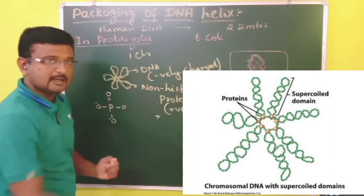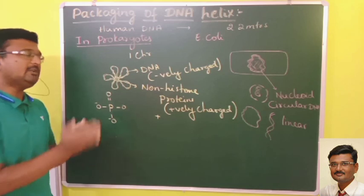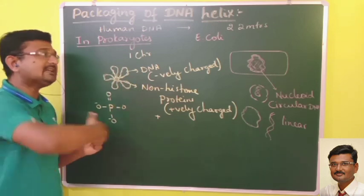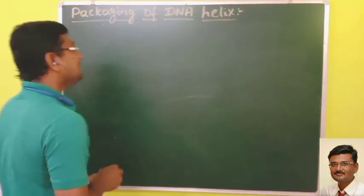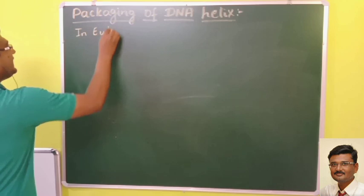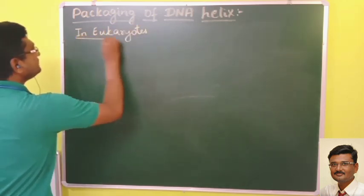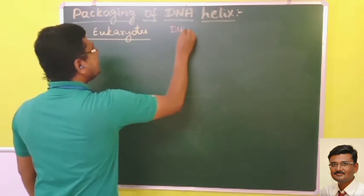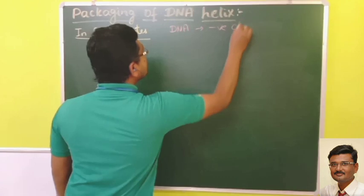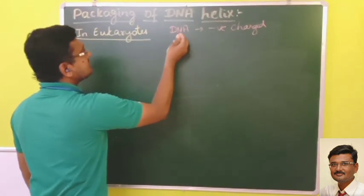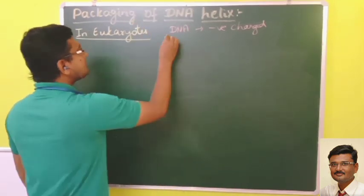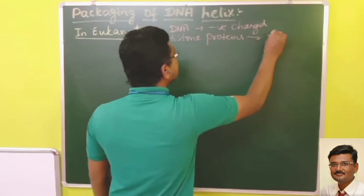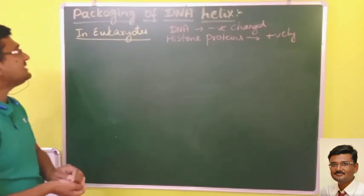This is how DNA is packed in prokaryotes — it appears as a single chromosome with loop-like structures. Now, moving to eukaryotes, the DNA packaging is more complex. In eukaryotes, the DNA is still negatively charged, but instead of non-histone proteins, the associated proteins are histone proteins, which are positively charged. This is the key difference between prokaryotic and eukaryotic DNA packaging.